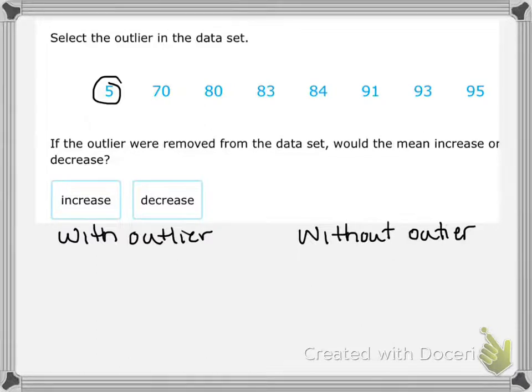So we're going to calculate the mean with the outlier and without the outlier. So with the outlier, I'm going to add up all those values. And the sum is 601 when we add up all those numbers. Then we want to divide by the number of numbers. So we have 1, 2, 3, 4, 5, 6, 7, 8 numbers. We're going to divide 601 by 8. And that gives us 75.125 or 75 and 1 eighth.